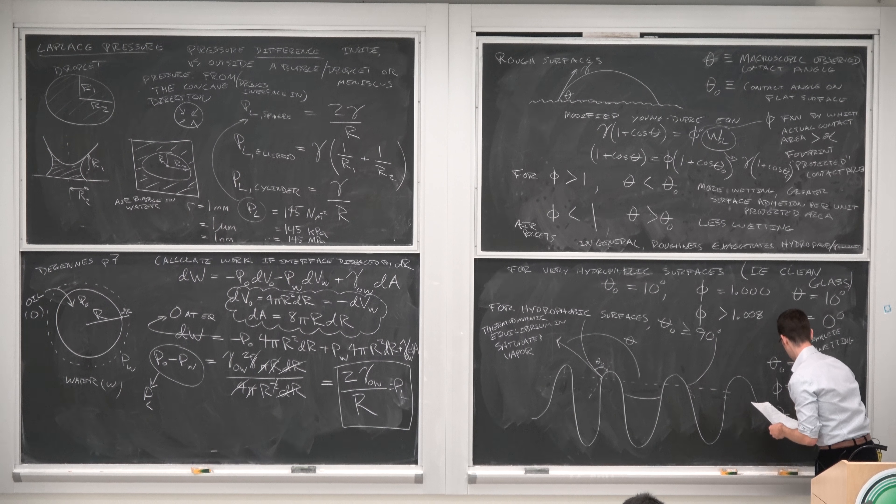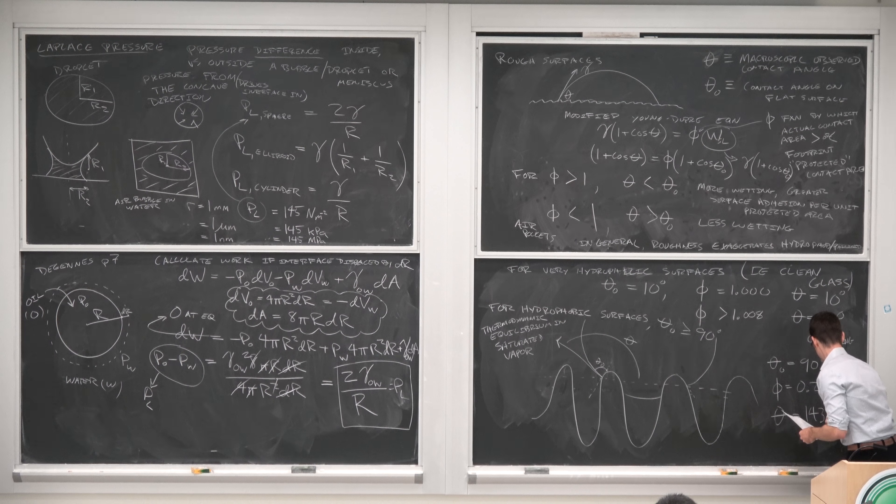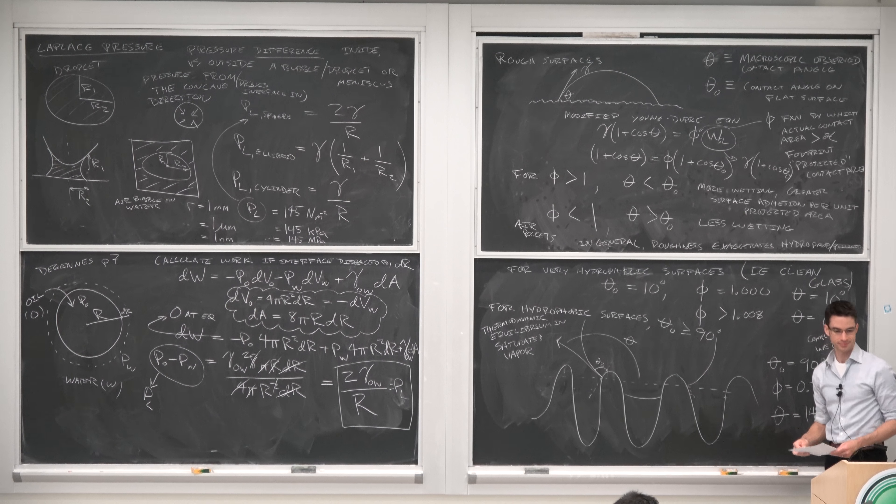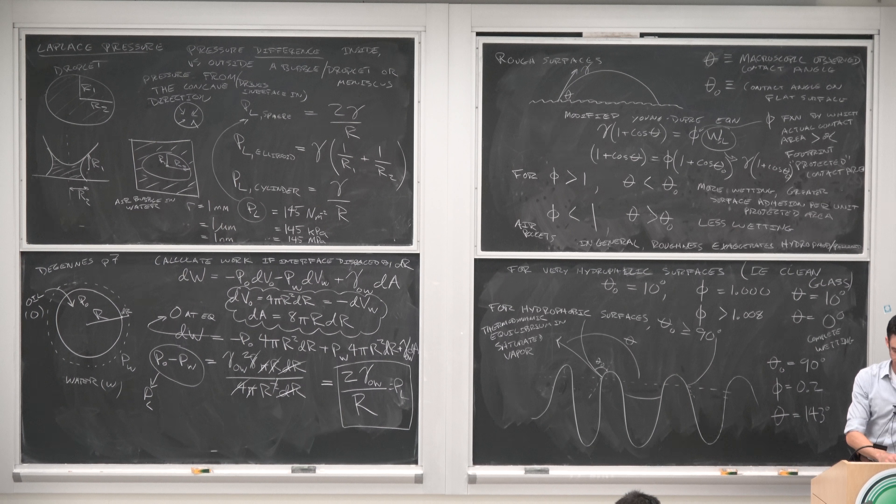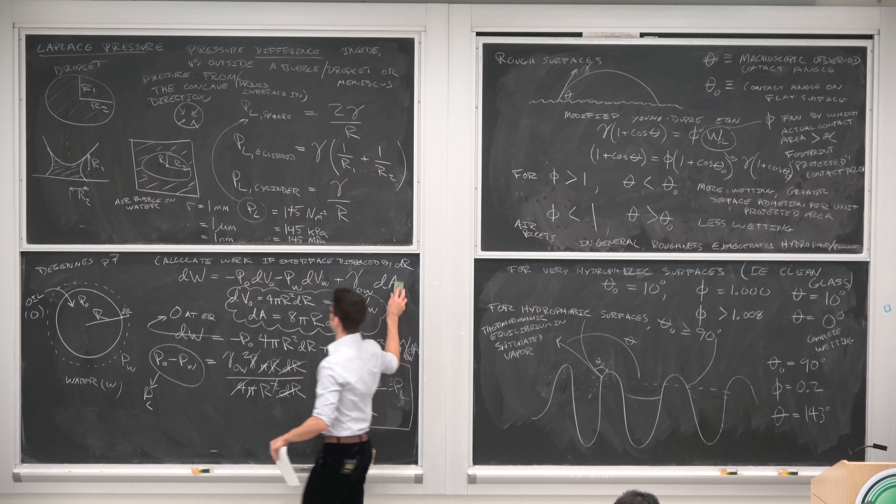So in such a scenario, suppose we said that theta naught was 90 degrees, then using our equations up here and a phi of 0.2, we could calculate a theta of 143 degrees.